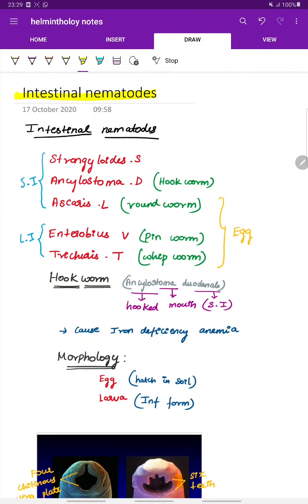Intestinal nematodes. Important intestinal nematodes are Strongyloides stercoralis, Ankylostoma duodenale, and Ascaris lumbricoides. All these three are small intestinal nematodes, whereas the Enterobius vermicularis and Trichuris trichiura are large intestinal nematodes.